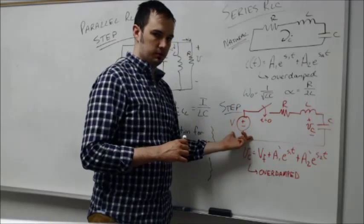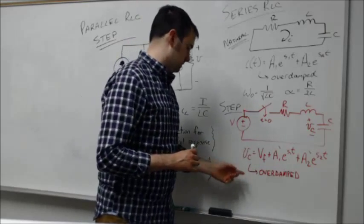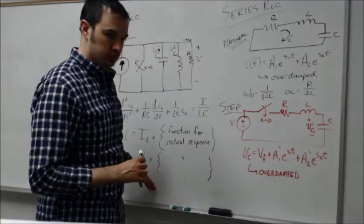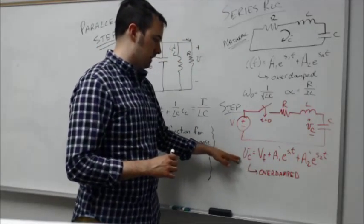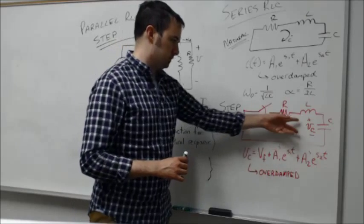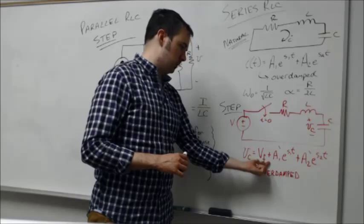As we see here, very similar to what we saw for the parallel case, in the specific condition of the over damped case, let's say the voltage across the capacitor would look at whatever the final voltage was, which in this case would simply be that I'm dropping all the voltage from the source across my capacitor once everything's settled out.